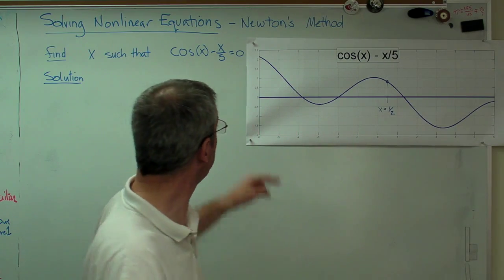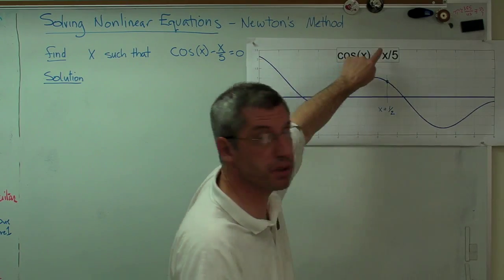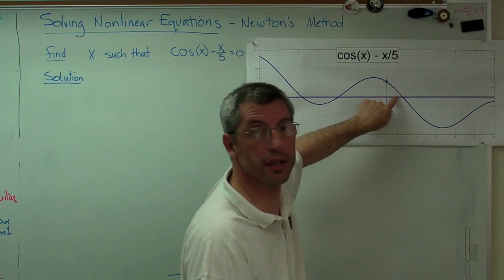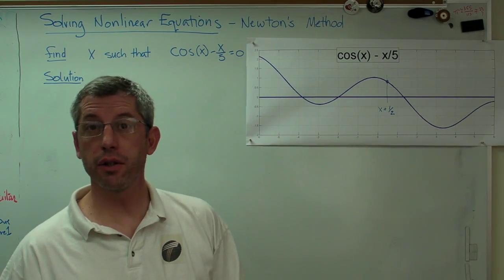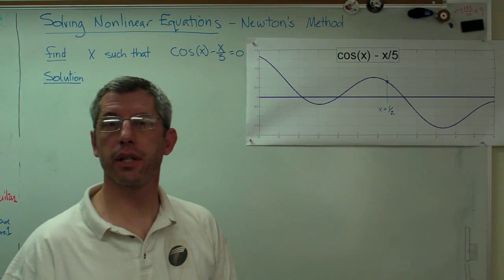Now a root of the equation is the value of x for which the equation equals 0. In graphical terms it means it's where my equation, that's the function right there, cosine x minus x over 5, it's where that curve crosses the x-axis.